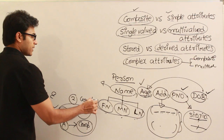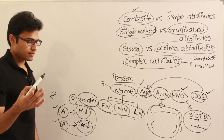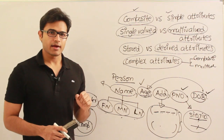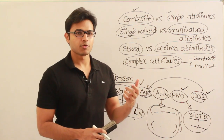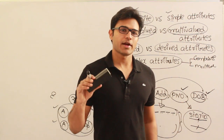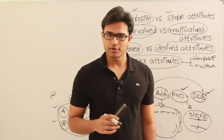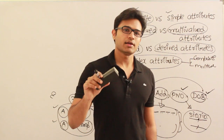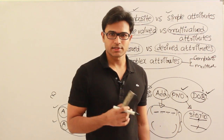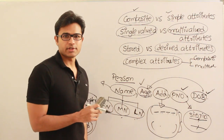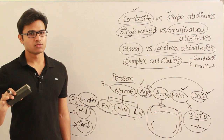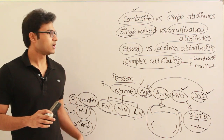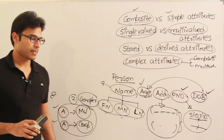If an employee's name contains first name and last name, what type of attribute is it? It is composite. So in questions, they will describe everything and ask which type of attribute is best suited to represent a particular feature of the entity. You can look at the description and answer such questions accordingly.